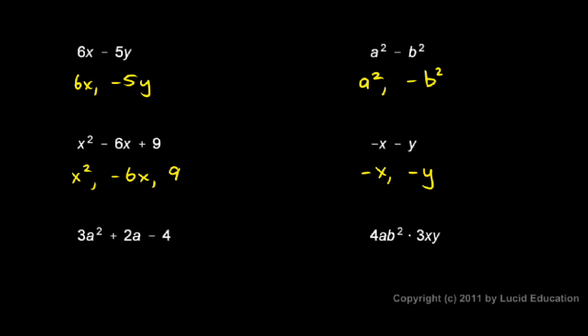Down here, 3a squared plus 2a minus 4. There are three terms: 3a squared, 2a, and minus 4, or negative 4.